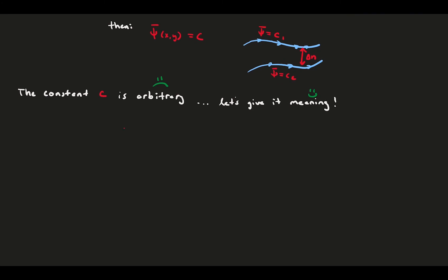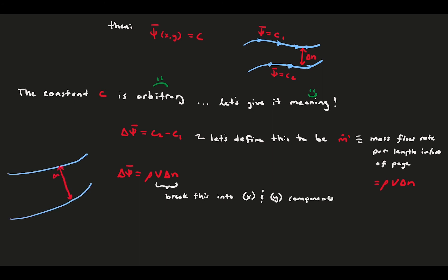Let's say that the difference between two streamlines, defined as delta psi bar, is equal to the mass flow rate per unit length into and out of the page, meaning you considered a third dimension you would multiply it by the characteristic length in that third dimension. Now, the mass flow rate per unit length is rho v delta n. We can decompose the velocity in delta n into the x and y components. Let's draw it out so that it's clear. The delta n has an x component, in this case negative delta x, and a y component delta y. The velocity x and y components are u and v respectively.